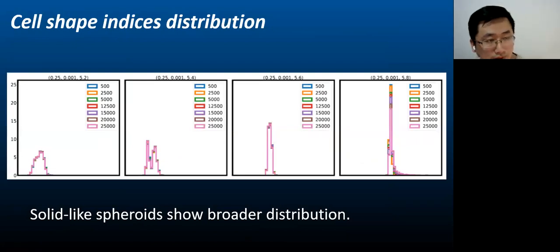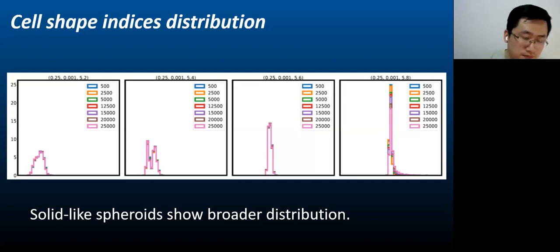Then we plot the cell shape indices distributions to give us some information for the spheroids during the shrinkage of the linker springs. This plot also shows the difference between the fluid-like spheroids and the solid-like spheroids. For highest value of target shape index S naught equals 5.8, it's a high peak, which means all cells can reach the target shape index. This proves the difference of the fluid-like spheroids from the solid-like spheroids.